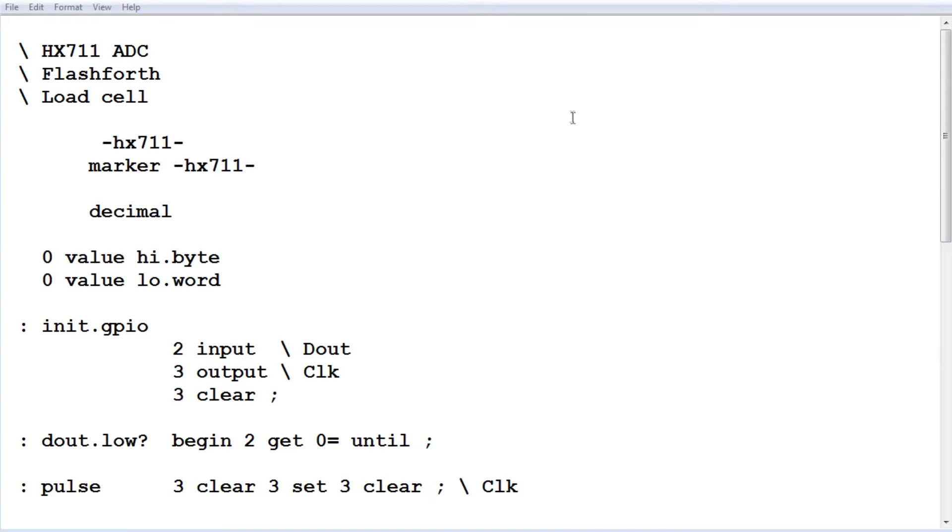Okay, here's the code running on the SCAMP3 board. It's written in Flash Forth, so the first thing we do, we create two values. One is called high byte, the other one is called low word, and this will contain the 24-bit load cell data.